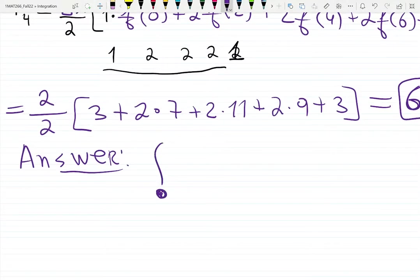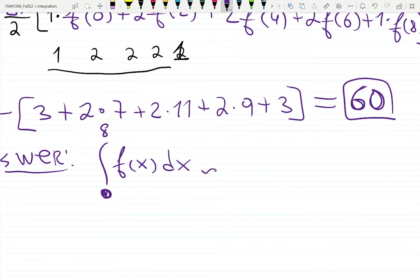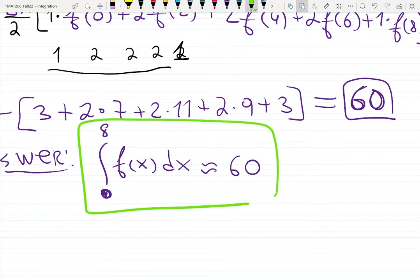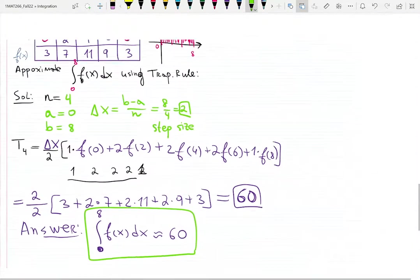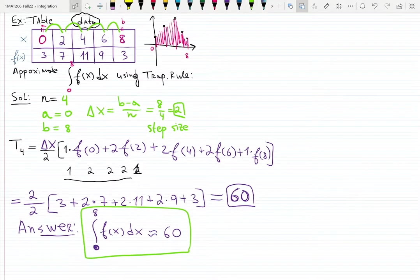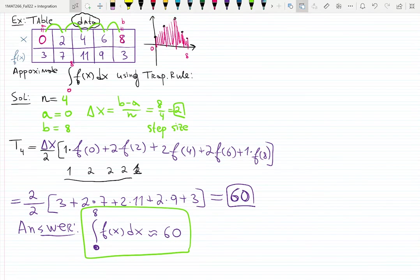So the integral from 0 to 8 of f(x), given in table form, is approximately 60. That's how you use given data to approximate integrals—area below functions. That's a pretty cool idea of how much data can give us.